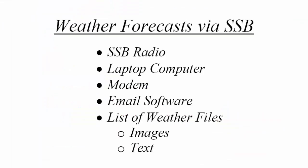That's the old-fashioned technology. Now what has happened is that you can receive those same graphic forecasts over the single sideband radio using current-day digital technology with a laptop computer. Basically what you need is a single sideband radio, a laptop computer, a modem that connects the two together, and email software so that you can send an email request to NOAA to send back the weather forecast image you want. And you need a list of weather files.